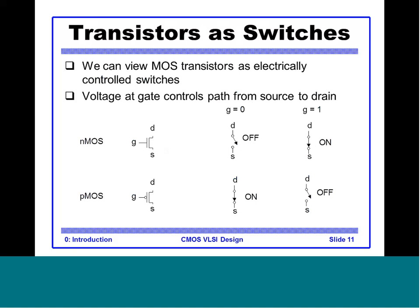A MOS transistor is simply a switch controlled by gate voltage, since the gate voltage controls the path from source to drain. For NMOS: when gate is 0, the drain-to-source connection is broken and the transistor is off; when gate is 1, current flows and the transistor is on. PMOS is complementary — when gate is 0 the transistor is on, and vice versa.